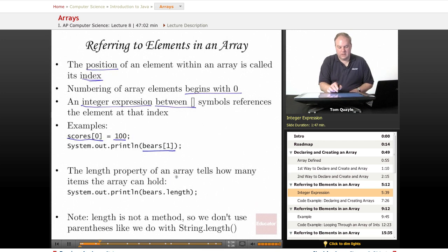An array has a length property that tells how many items the array can hold. So in my array of bears, I call bears.length to tell how many items that array can hold. This will return the actual number of items that it can hold. Even though the numbering is from 0 to n minus 1, it will return the actual number of positions, which would be n. Note that length is not a method, so we don't use parentheses after length like we do with string.length. Length is not a method of array. It's a property of an object of type array.